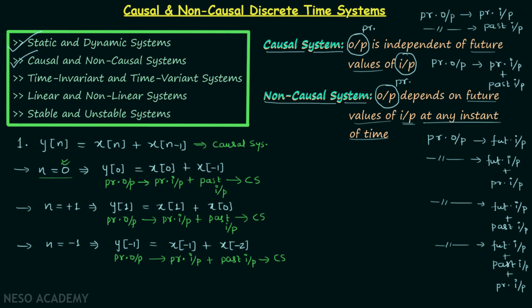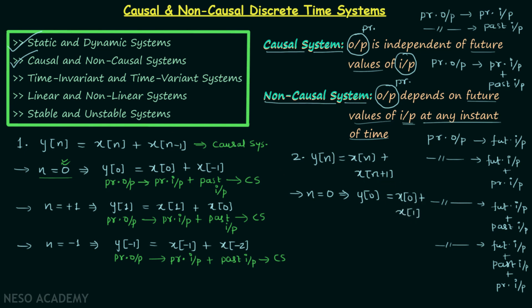Now let's move on to example 2. In example 2, output y[n] = x[n] + x[n+1]. Checking when n = 0 gives y[0] = x[0] + x[1]. Here y[0] is the present output, x[0] is the present input, but x[1] is the future input. Since the present output is depending on a future input, the system is a non-causal system.